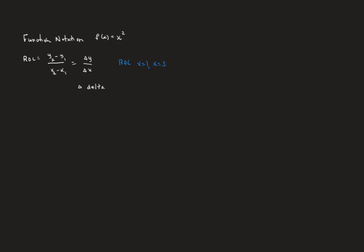We write this as f(3) minus f(1) over 3 minus 1. f(1) is 1 squared which is 1, and f(3) is 3 squared which is 9. So we get 9 minus 1 on top and 3 minus 1 equals 2 on the bottom. That's 8 divided by 2, which equals 4. No units were specified, so the rate of change is just 4.